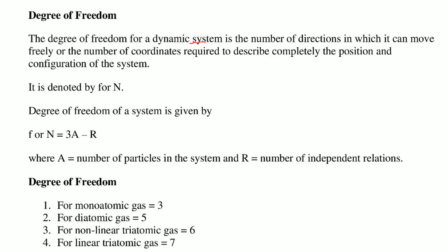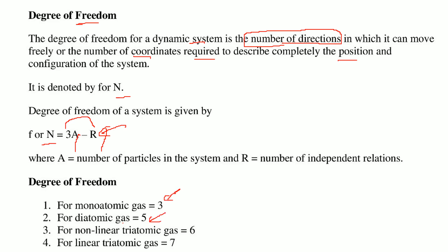The degree of freedom for a dynamic system is the number of directions in which it can move freely, or the number of coordinates required to completely describe the position and configuration of the system. It is denoted by F or N, and can be given by F = 3A − R, where A is the number of particles and R is the number of independent relations. Degree of freedom: for monoatomic gas it is 3, for diatomic gas it is 5, for non-linear triatomic gas it is 6, and for linear triatomic gas it is 7.